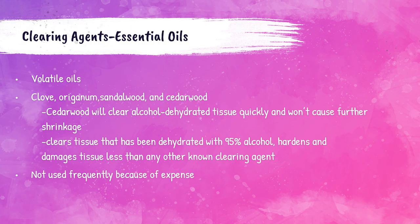Essential oils are easily vaporized clearing agents derived from plants with a strong plant odor. They include cedarwood, clove, oreganum, and sandalwood. They are expensive and not frequently used. If essential oils are used, they must be removed from the tissue by either xylene or toluene before infiltration. Cedarwood is the most commonly used; it clears quickly, doesn't cause shrinkage, and can clear tissue dehydrated with 95% alcohol. Tissues can remain in cedarwood oil indefinitely as it doesn't harden or damage tissue.